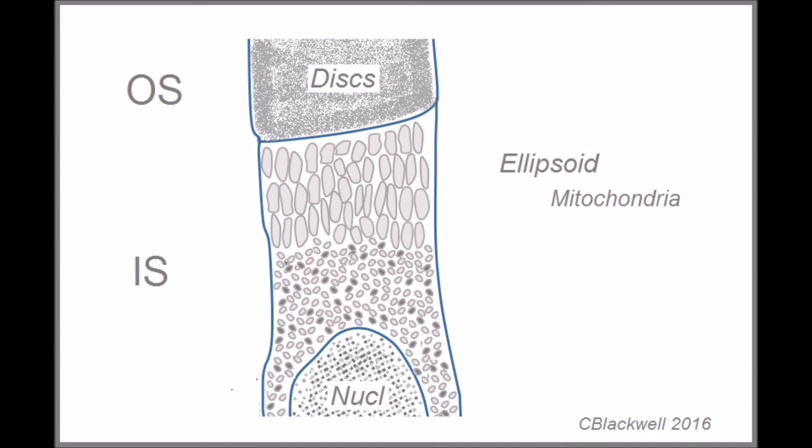Adjacent to the outer segment is the ellipsoid region, so named because of the heavy concentration of mitochondria here. One theory suggests the highly active mitochondria are closest to the oxygen source of the choroid.